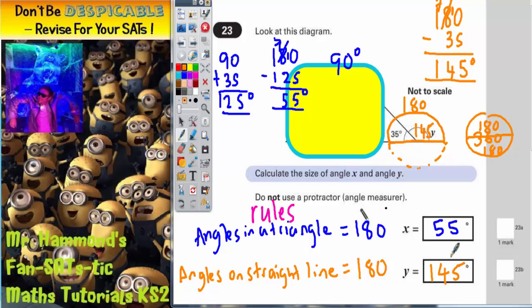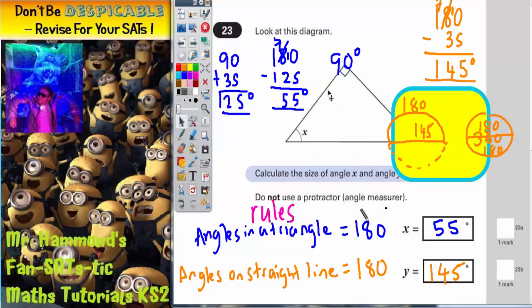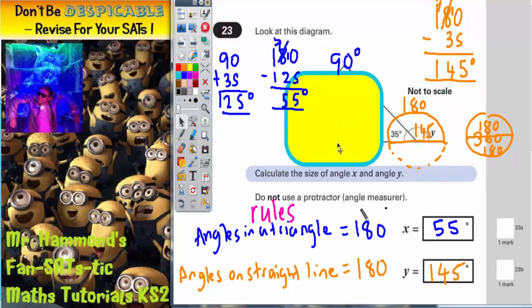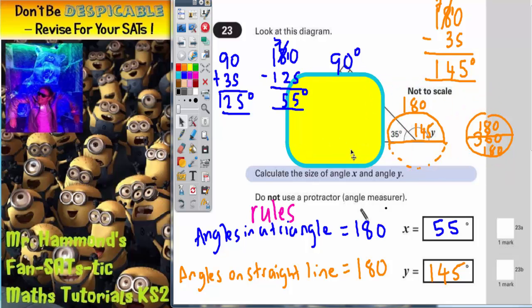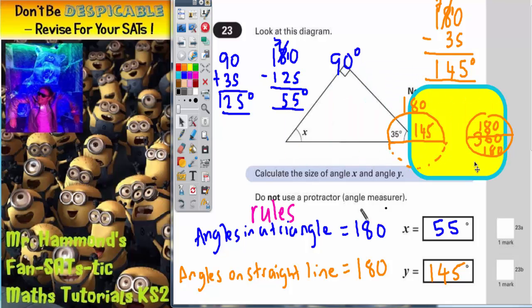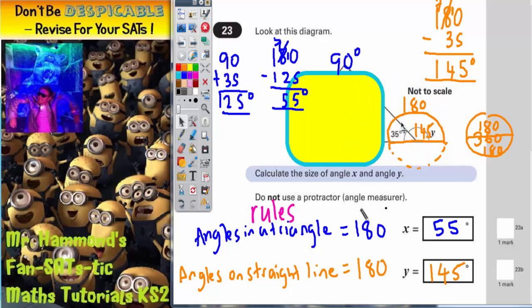So there's your two answers. But just remember your rules. Angles in a triangle must make 180, which is that part of the diagram. And then angles on a straight line must make 180, which is this part of the diagram here. Always helpful to cover up parts of the diagram to make them more obvious. Angles in the triangle is there. Angles in a straight line is there.